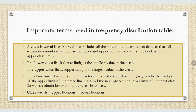Important terms used in the Frequency Distributions table. A class interval is an interval that includes all the values in a quantitative data set that fall within two numbers, known as the lower and upper limits of the class. The lower class limit is the smallest value in the class.